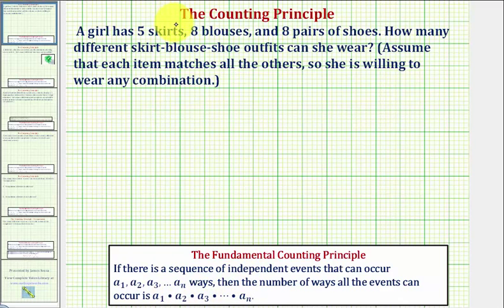Looking at our problem, notice how the girl has to select a skirt from five skirts, a blouse from eight blouses, and a pair of shoes from eight pairs of shoes. This can be viewed as three independent events: the first event is selecting the skirt, the second event is selecting the blouse, the third event is selecting the shoes.